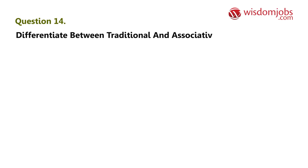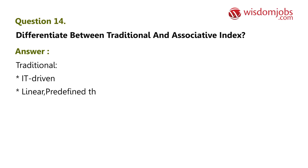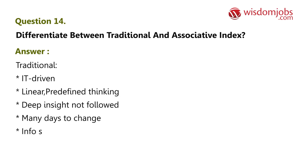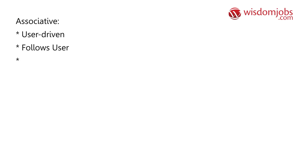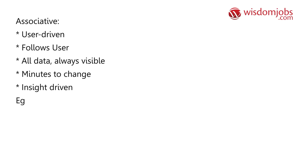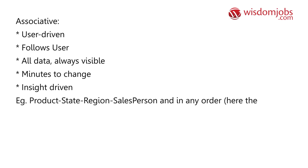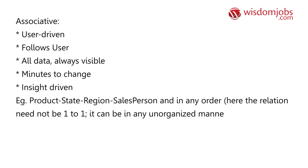Question 14: Differentiate between traditional and associative index. Answer: Traditional — IT-driven, linear, predefined thinking; deep and narrow; not followed; many days to change; e.g., Region, State, Product, Salesperson in a specific order. Associative — user-driven, follows user; all data always visible; minutes to change; e.g., Product, State, Region, Salesperson in any order. The relation need not be one-to-one; it can be in any unorganized manner.